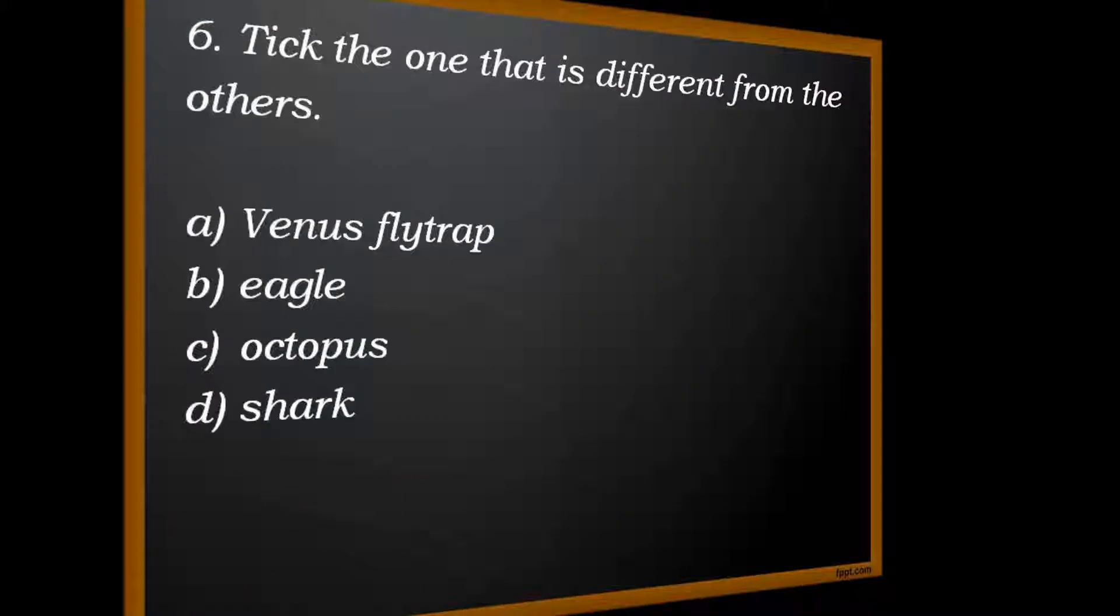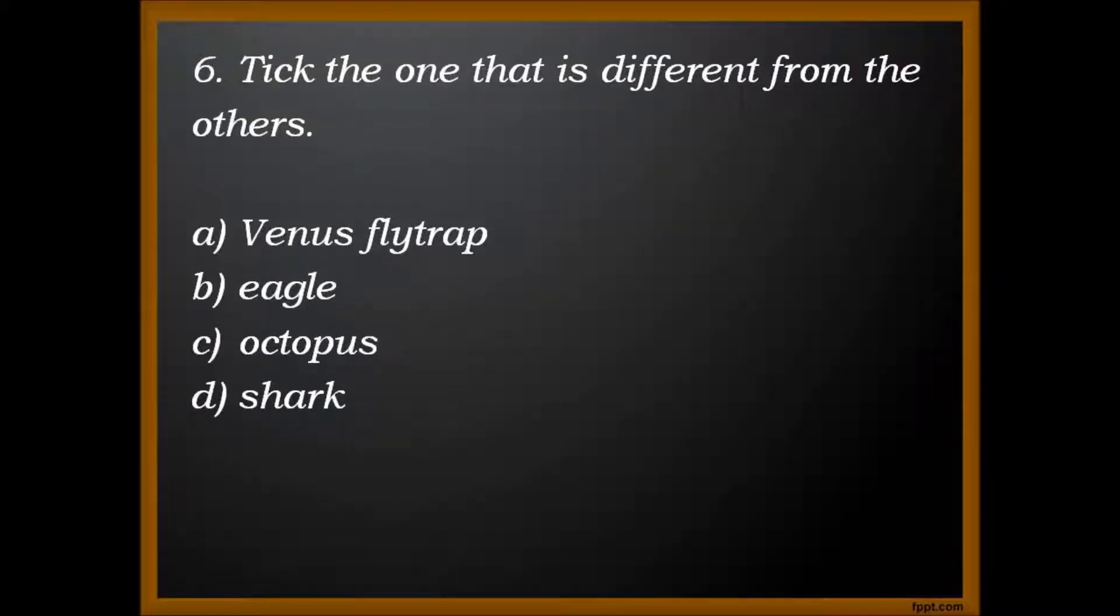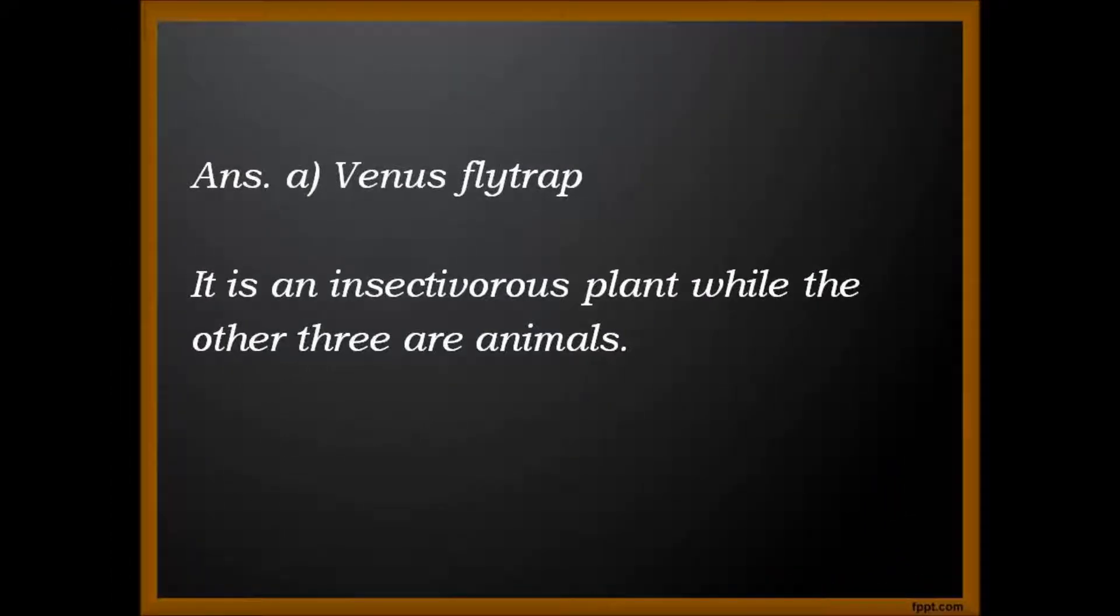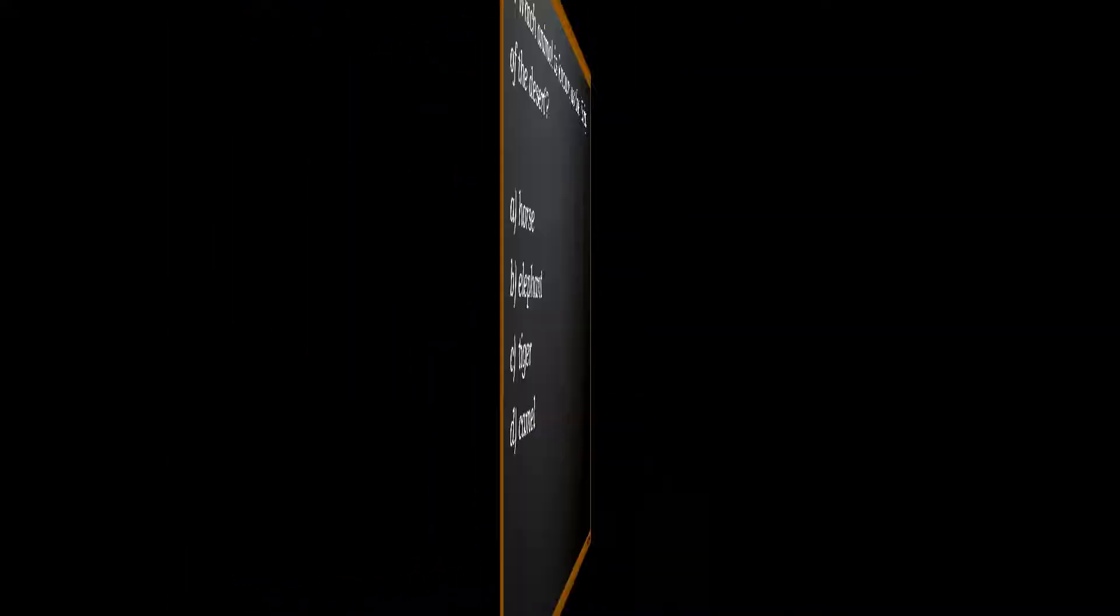Question 6. Tick the one that is different from the others. A. Venus flytrap. B. Eagle. C. Octopus. D. Shark. Answer. A. Venus flytrap. It is a plant whereas the other three are animals.